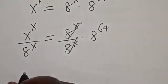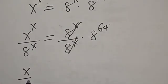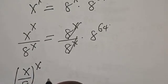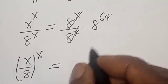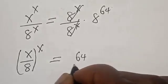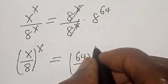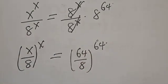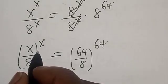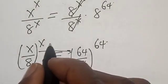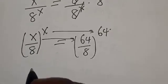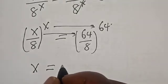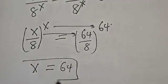We have s divided by 8, all raised to the power s, equal to 8 raised to the power 64, which is the same as 64 divided by 8, raised to the power 64. If you compare both sides, s corresponds to 64 and the base 8 matches. Therefore, s is equal to 64. That is our final answer.